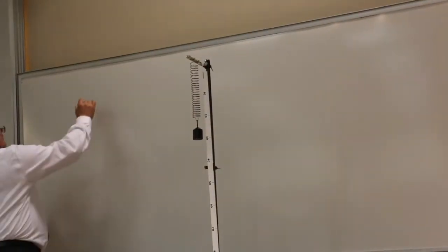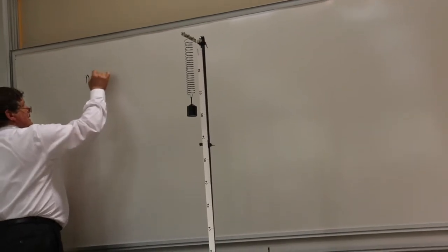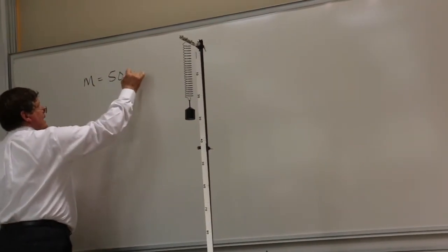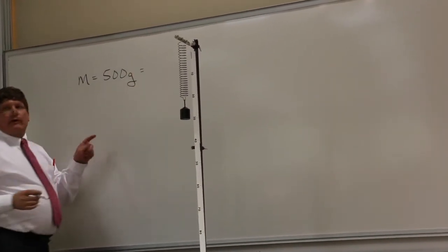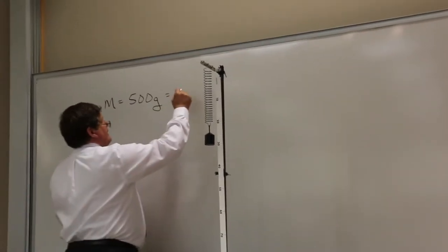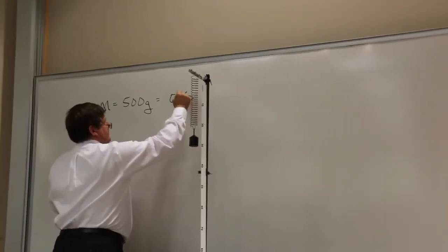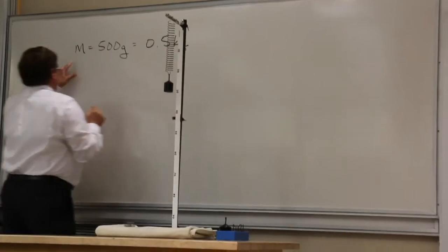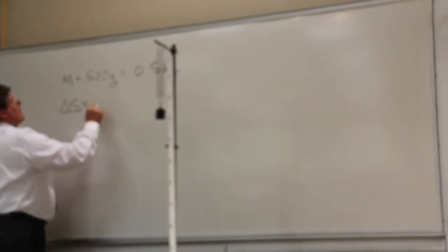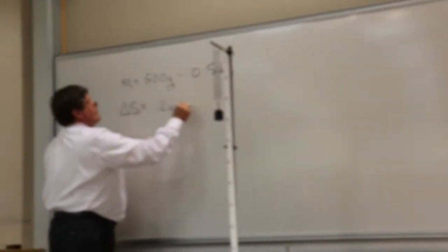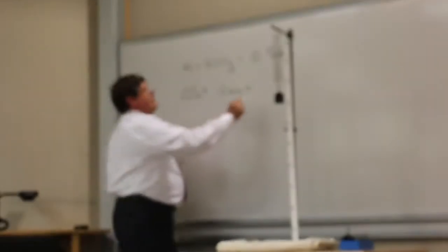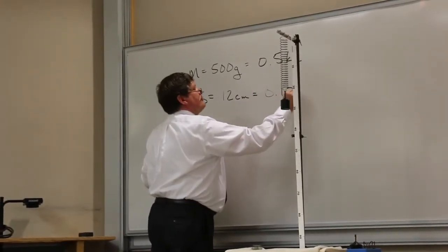So that means that the mass is 500 grams. Remember when we have grams, we always put that in kilograms. And the stretch, we call that delta S. That delta S is 12 centimeters. But remember, we always have to convert everything to meters. So that's going to be 0.12 meters.